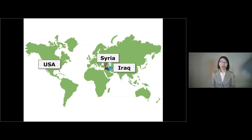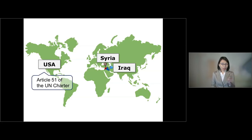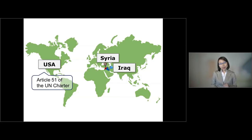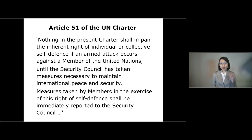In September 2014, when the US government began airstrikes against the Islamic State in the territory of Syria, the US government claimed that its military actions were in accordance with Article 51 of the UN Charter. The question we need to answer is whether or not the US claim is justified. In this clip, I'd like to talk about five different aspects of Article 51 of the UN Charter, so that you can apply those aspects to the analysis of a particular scenario.